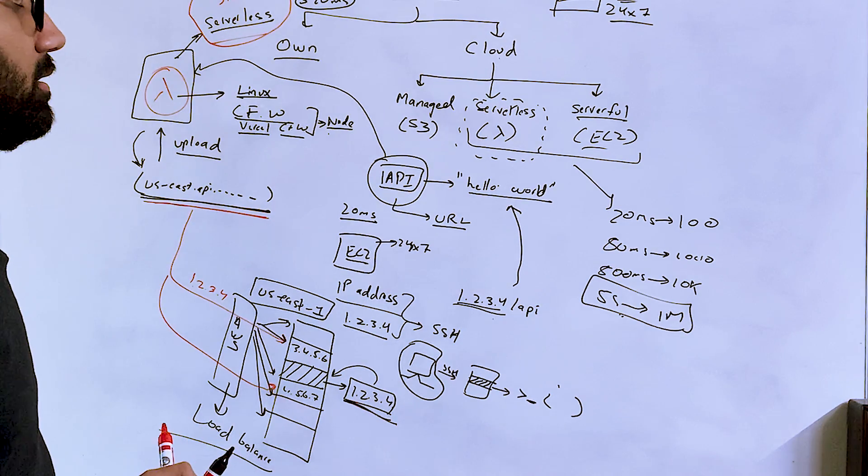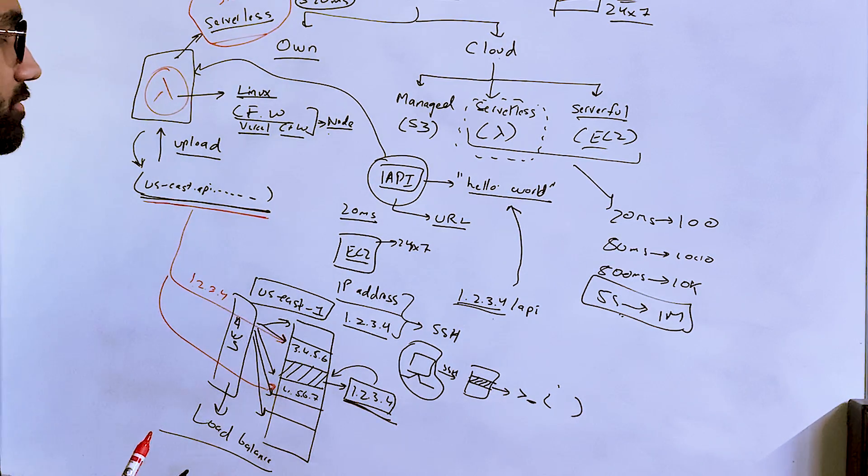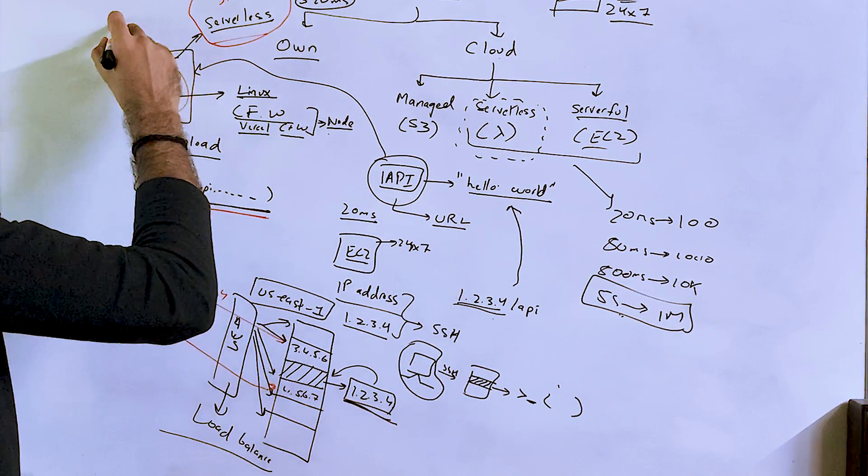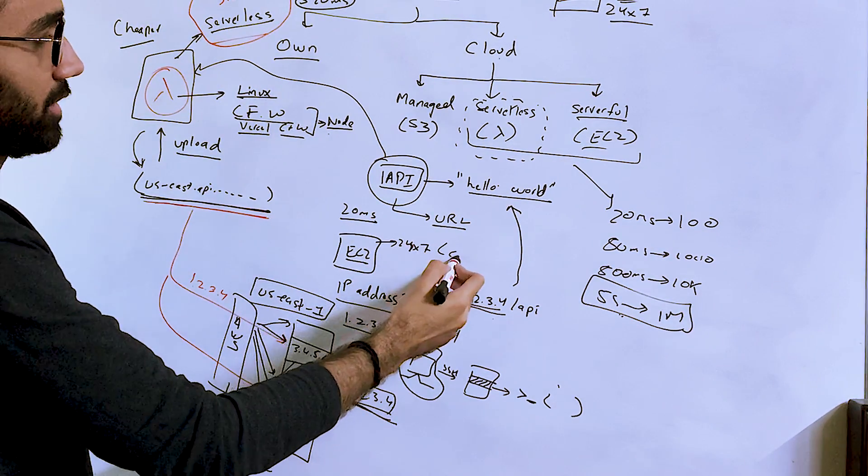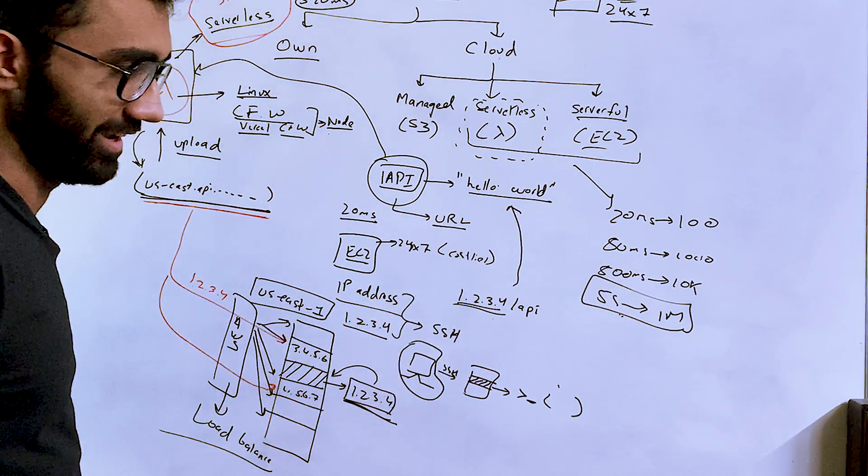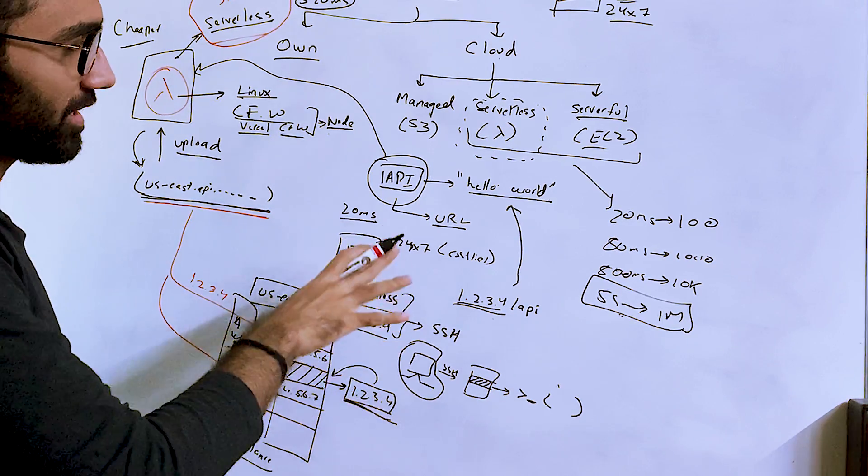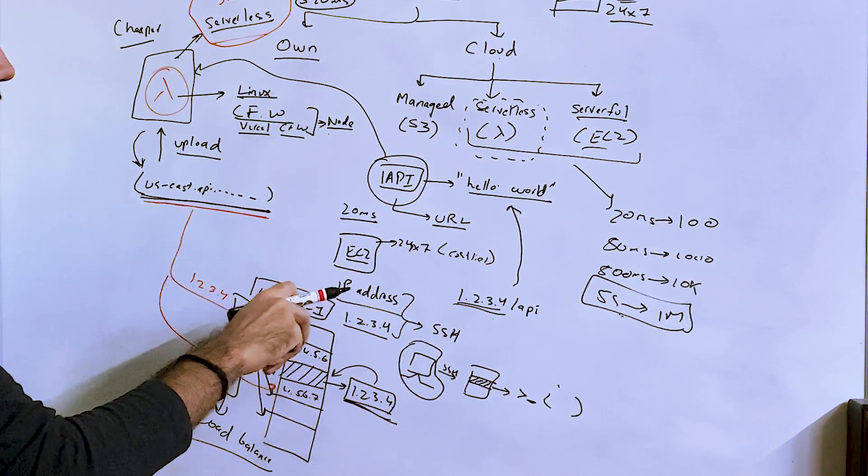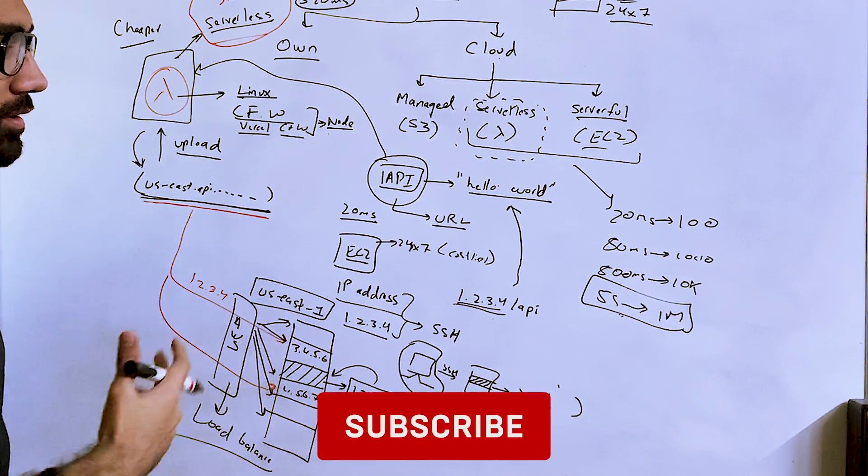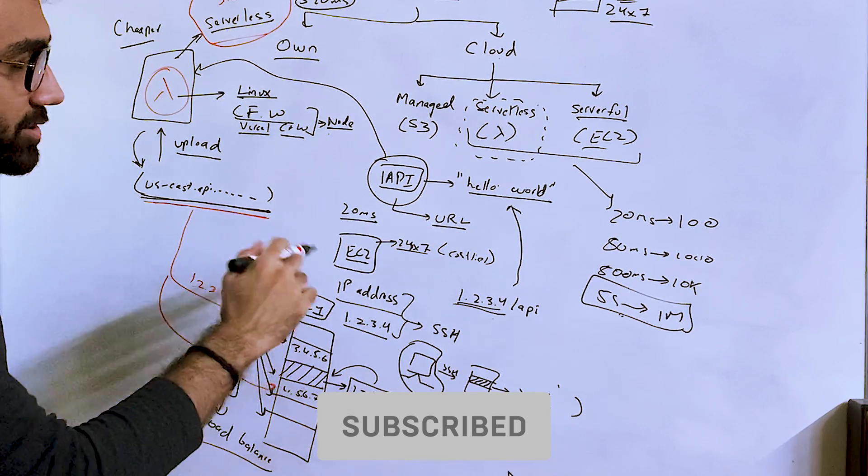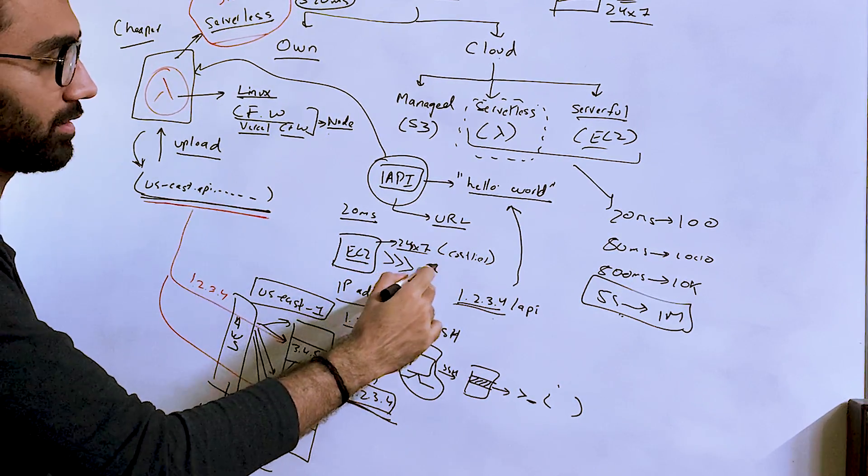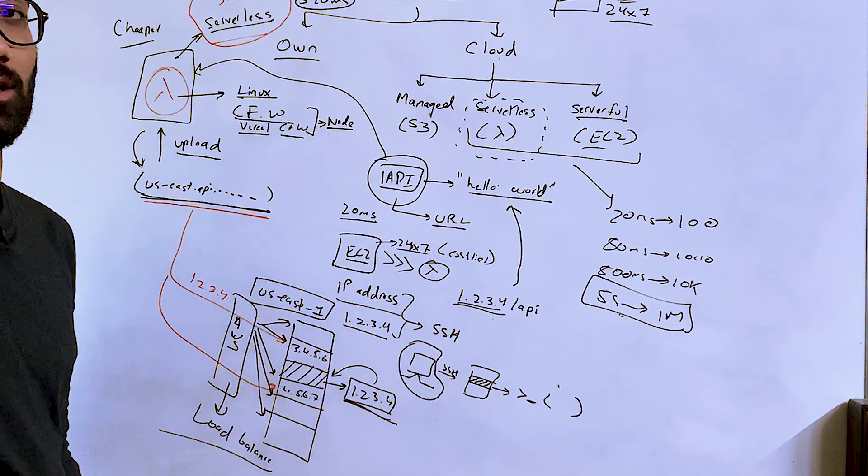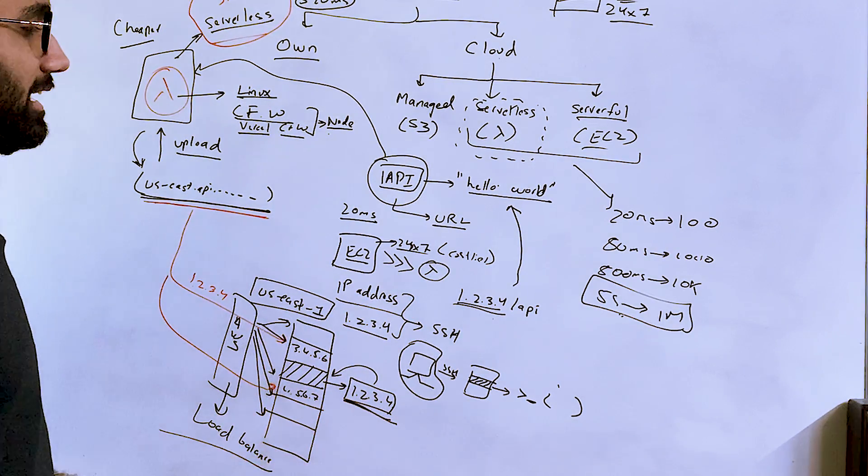Now, another question, another thing which people mention a lot of times is that serverless is actually cheaper and serverful, or in this case, like running an EC2 instance 24-7 is actually costlier. But that is actually a lie because if you are a big organization or if you are someone who actually needs compute power almost 24-7, then actually running an EC2 instance is much, much cheaper, much, much better than using lambdas if you know that you are doing your calculation.